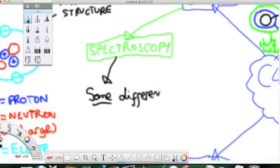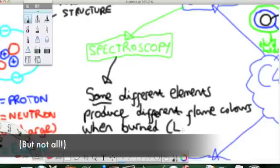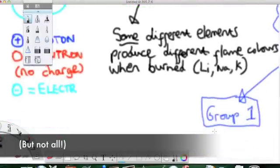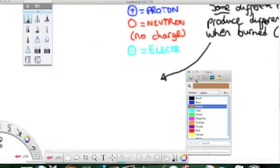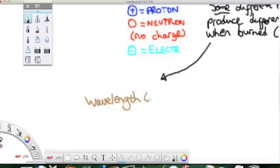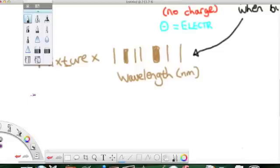So, spectroscopy relies on the fact that some different elements produce different coloured flames. Not all elements produce different flames. Some of them produce the same colour. However, if you then refract those colours to get what we call spectra, or lines showing the wavelengths of the light emitted, each different element has a unique spectra.